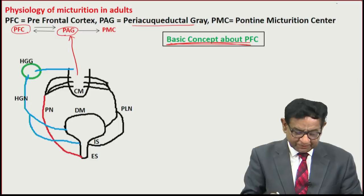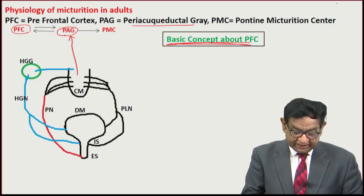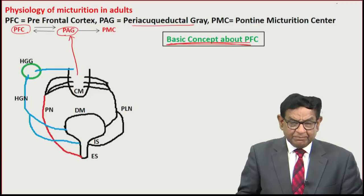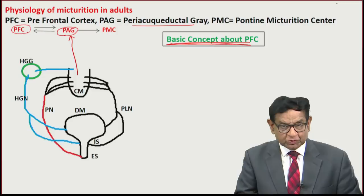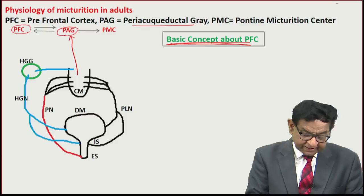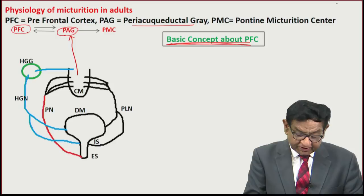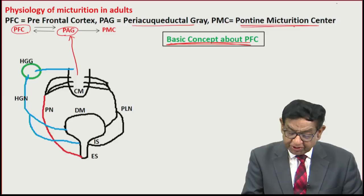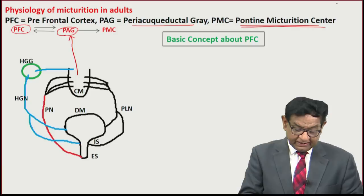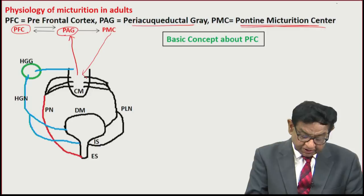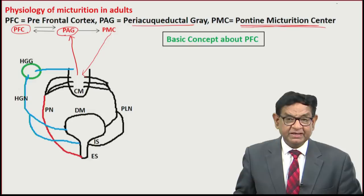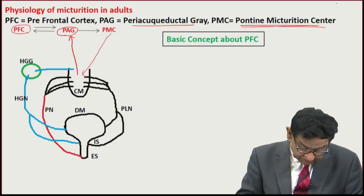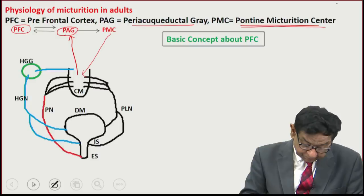So to recap: when the bladder is full, message goes to PAG, then to the prefrontal cortex. The prefrontal cortex says 'get up, go to the toilet.' Once in the toilet, the prefrontal cortex signals the PAG, which activates the pontine micturition center (PMC). The PMC sends a message down to the pelvic nerve, activating it, and urine passes. This is the normal method of micturition in adults.